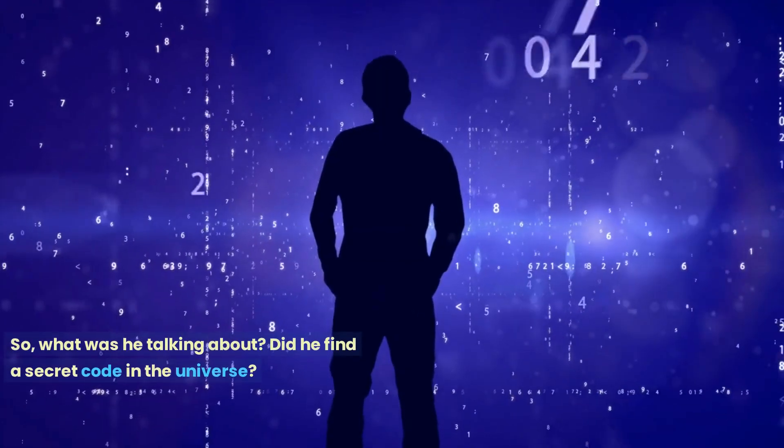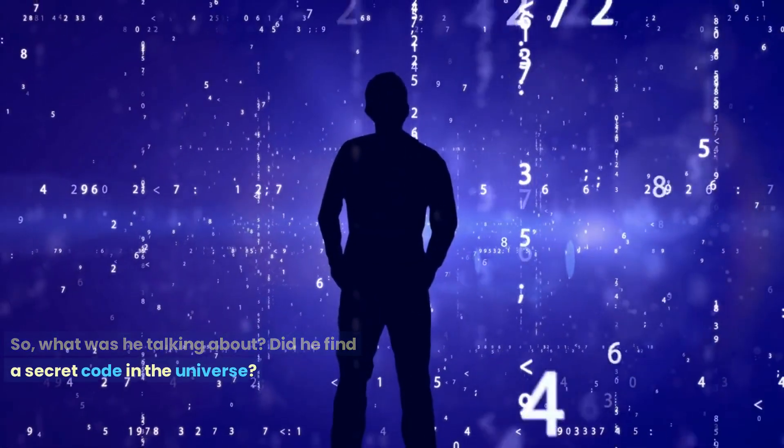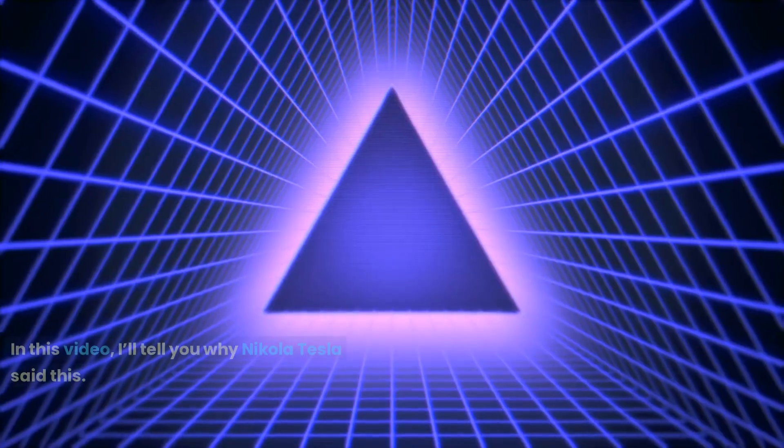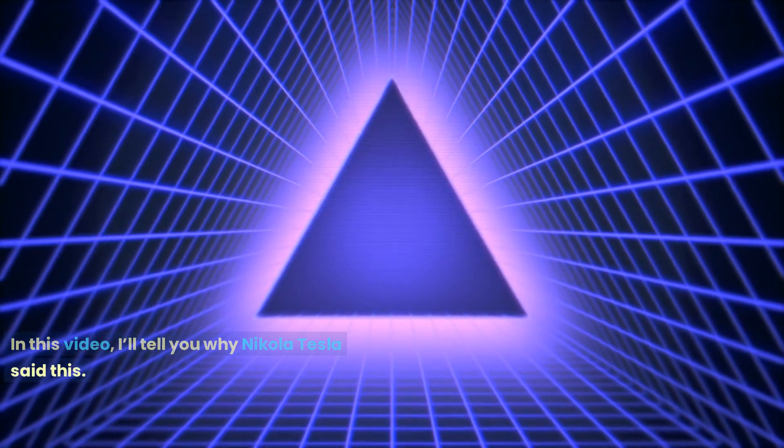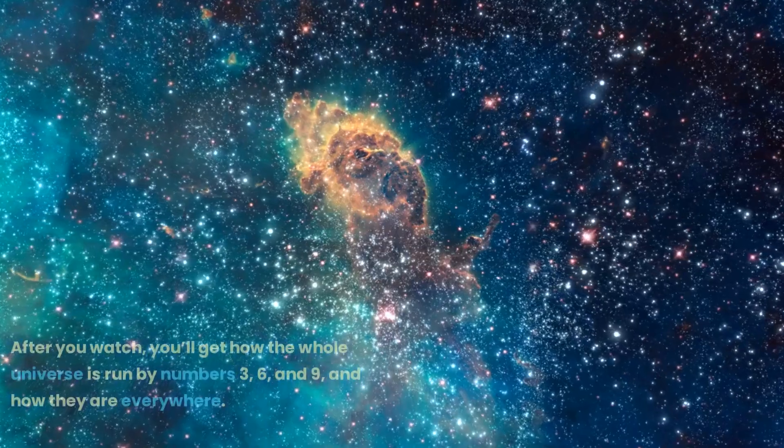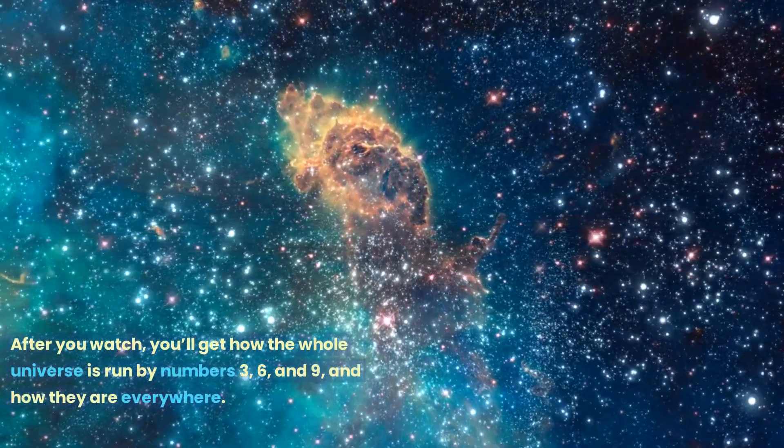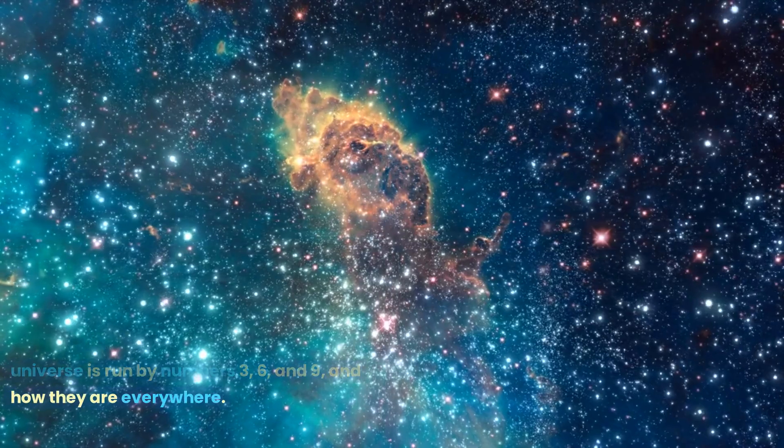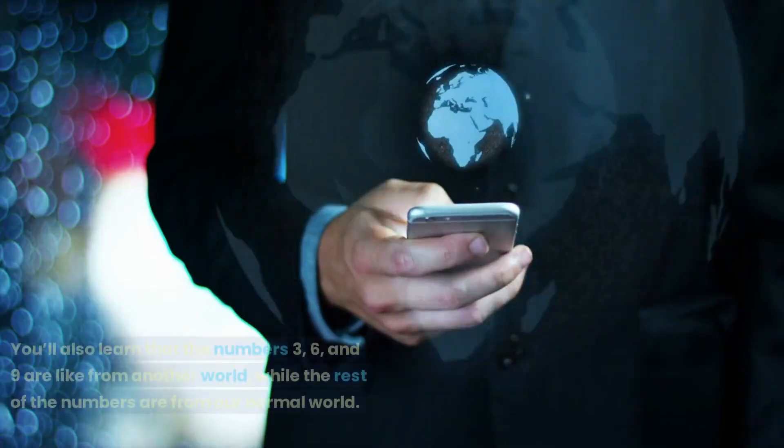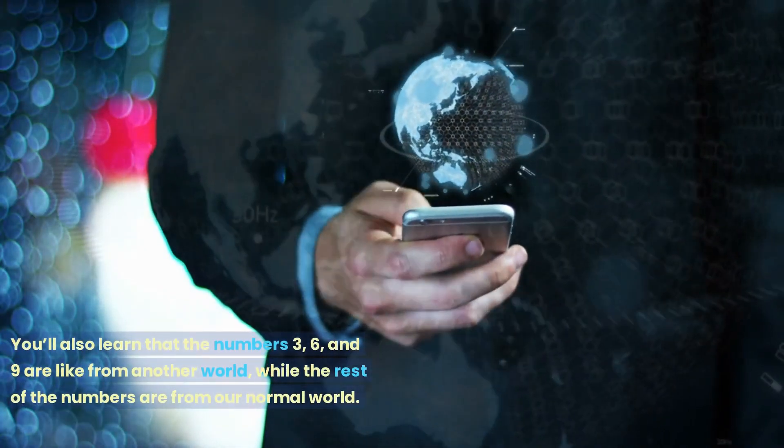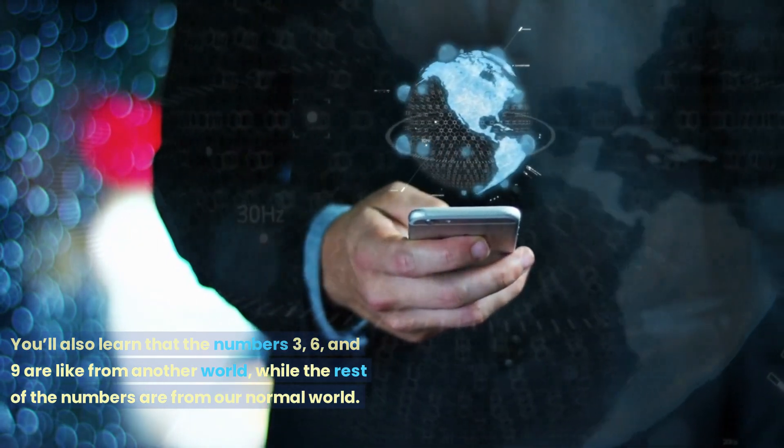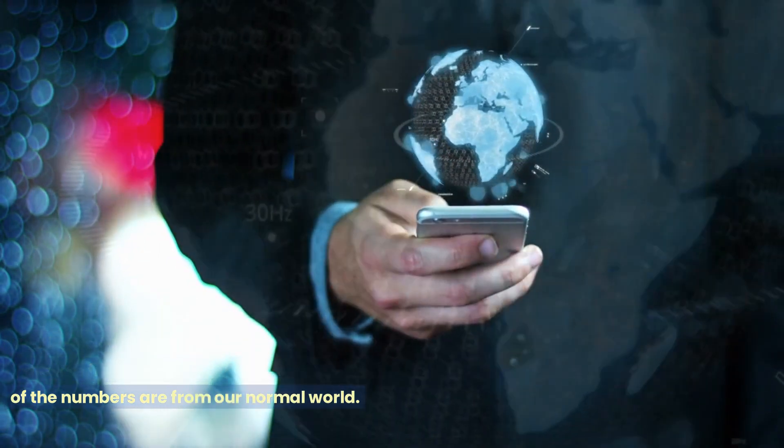So, what was he talking about? Did he find a secret code in the universe? In this video, I'll tell you why Nikola Tesla said this. After you watch, you'll get how the whole universe is run by numbers 3, 6, and 9, and how they are everywhere. You'll also learn that the numbers 3, 6, and 9 are like from another world, while the rest of the numbers are from our normal world.